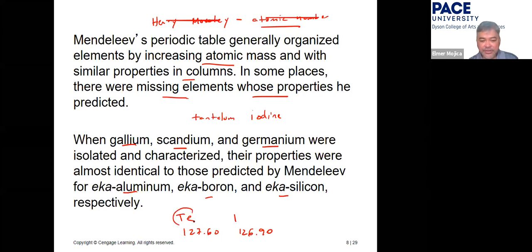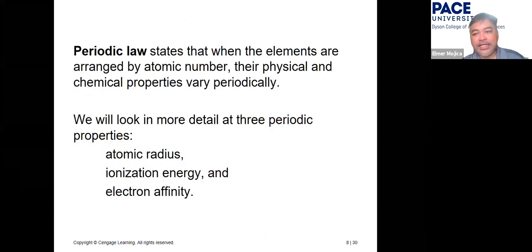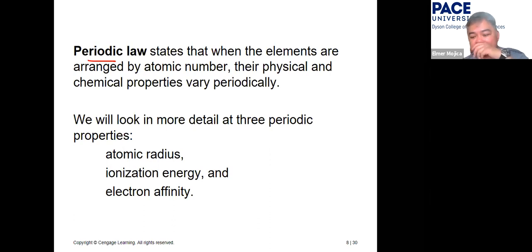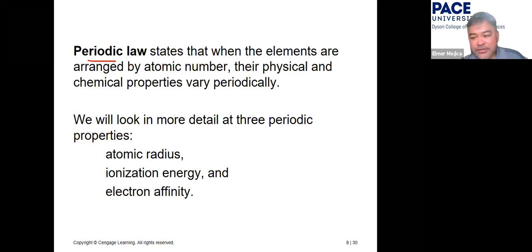Unfortunately, Henry Moseley was one of the casualties of World War I. The periodic law states that when elements are arranged by atomic number, their physical and chemical properties vary periodically. We will look in detail at three periodic properties: atomic radius, ionization energy, and electron affinity.